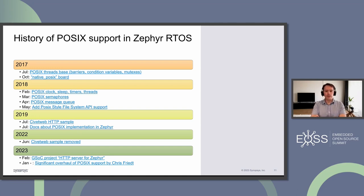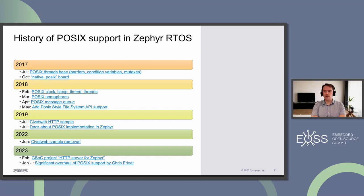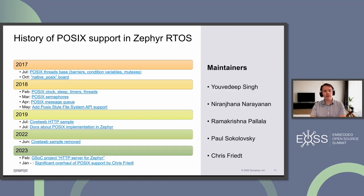Another noticeable item is the CivetWeb application, which we'll discuss in a moment. What I can also say is that 2023 seems to be a year of POSIX in Zephyr again, because our current maintainer Chris has a very systematic approach and contributes a lot of fixes and improvements, as well as a nice detailed roadmap. You are more than welcome to contribute as there is a lot of work ahead of us in that area. On the right you may see a list of people who significantly contributed over time to that part of Zephyr development.